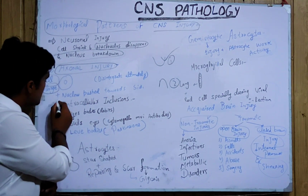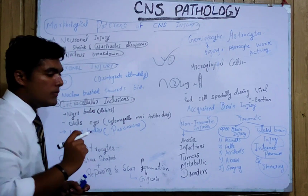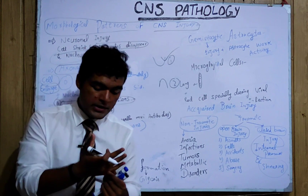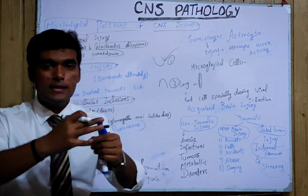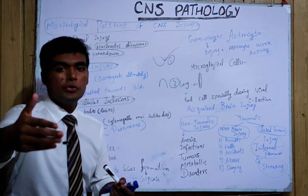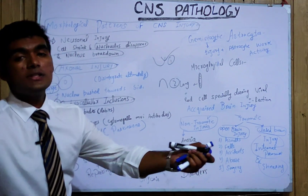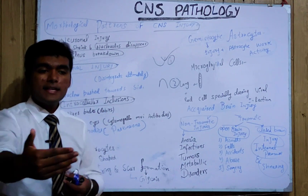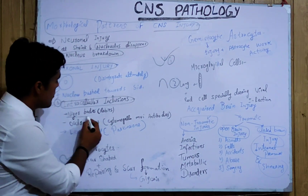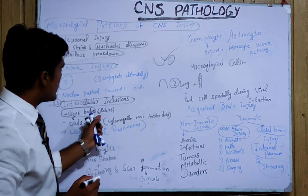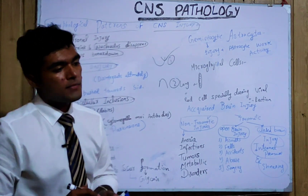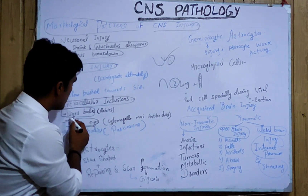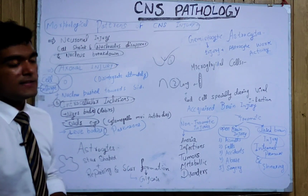The third type is intracellular inclusion. 'Intracellular' means within cells, and 'inclusion' refers to material that is included — such as when viral agents are included in CNS. We have Negri bodies, which are rounded bodies seen in rabies disease affecting the CNS. We have owl eyes in case of cytomegalovirus, and Lewy bodies in case of Parkinson's disease.